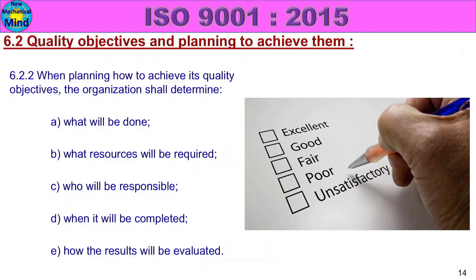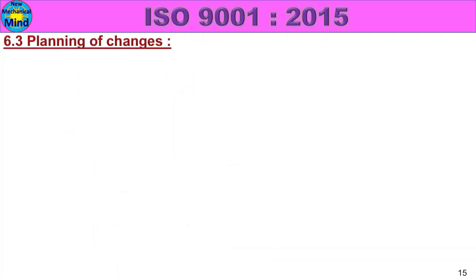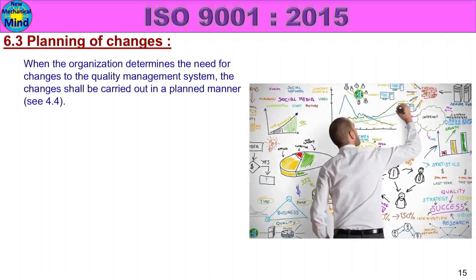So the 6.2 class is in detail. Next, 6.3 — Planning of Changes. Quality Management System: is there any planned change? When the organization determines the need for changes to the quality management system, the changes shall be carried out in a planned manner.